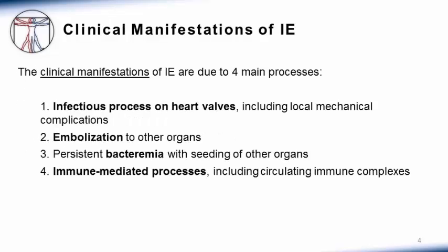The clinical manifestations of infective endocarditis are due to four main processes. First, the infectious process on the heart valves, including local mechanical complications. Second, embolization to other organs. Third, persistent bacteremia with seeding of other organs. And fourth, immune-mediated processes, including circulating immune complexes.